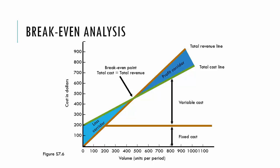We see where the two lines intersect is the break-even point. To the right of that point we will be in the profit corridor, and to the left we will be in the loss corridor.